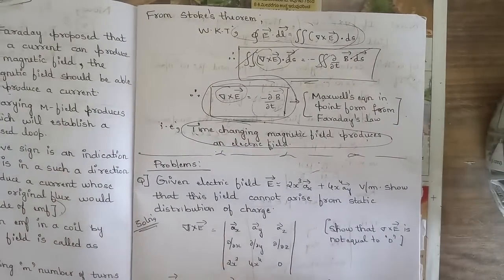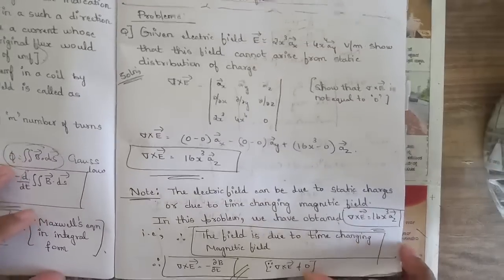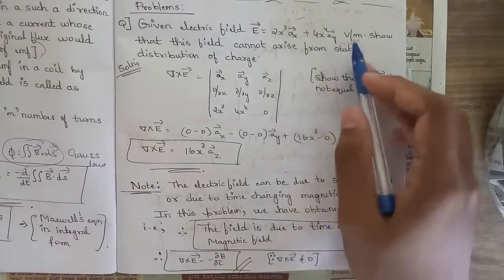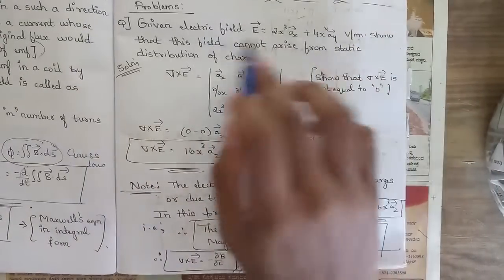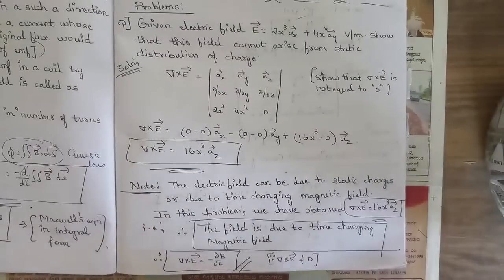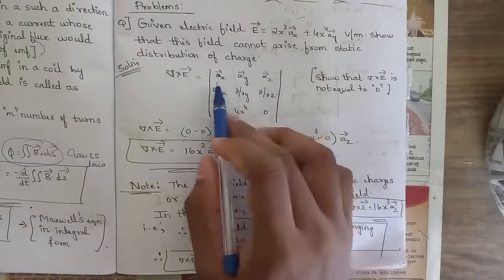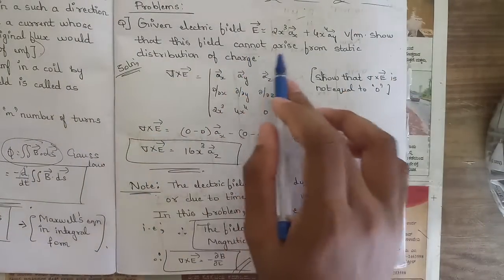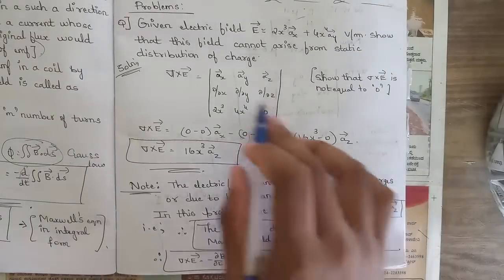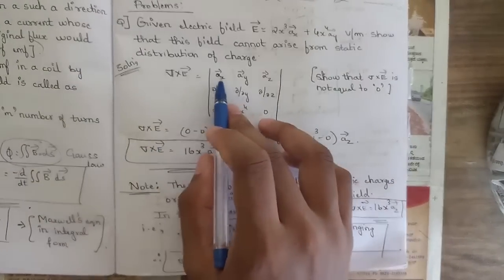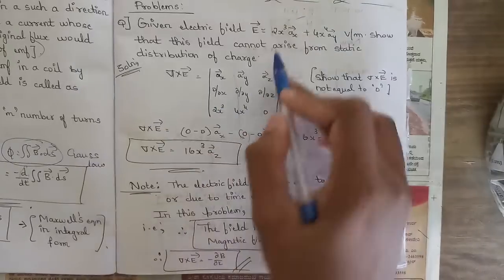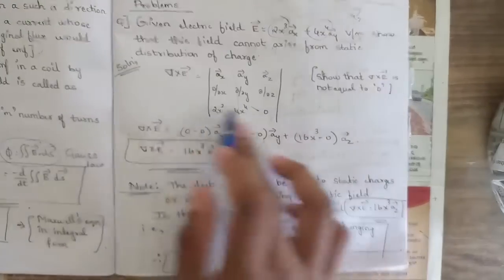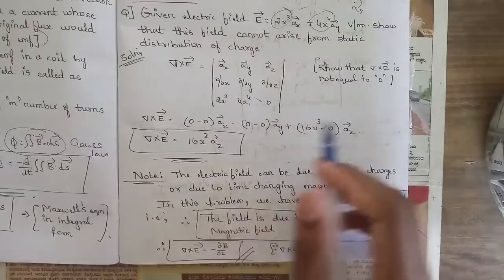Let's see a problem to prove this. Given: electric field E = 2x³ ax − (4x + 4x⁴) ay V/m. We need to show that this field cannot arise from a static distribution of charge. We compute ∇×E: writing the determinant with rows [ax, ay, az], [∂/∂x, ∂/∂y, ∂/∂z], [2x³, −(4x+4x⁴), 0], and evaluating.